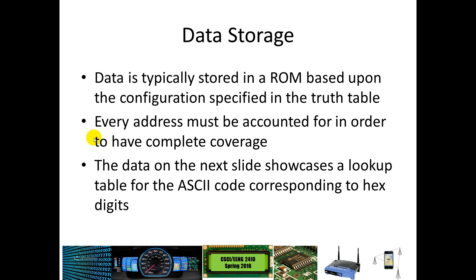Data storage is typically based on a kind of truth table, where you have 1s and 0s for different functions — you can store several different functions in there. You might have an entire byte or several bytes of data coming out in each word, but every address has to have something stored there. If you want complete coverage, you might blank the ROM at the beginning — making everything all 0s or all 1s — and then go back and fill in the switching elements as appropriate.